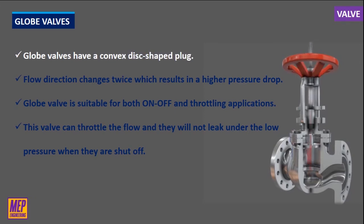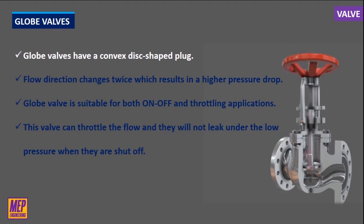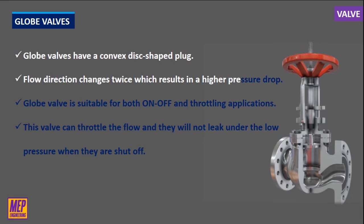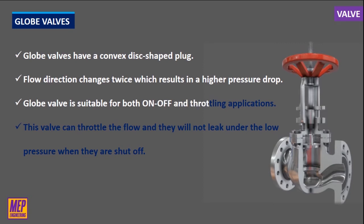Globe valves have a convex disc-shaped plug which raises and lowers via a rising stem into a circular seat around the inside of the globe-shaped body. The flow of fluid through the globe valve has an S-shaped path. Due to this, the flow direction changes twice, which results in a higher pressure drop.